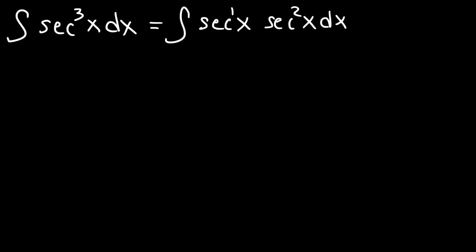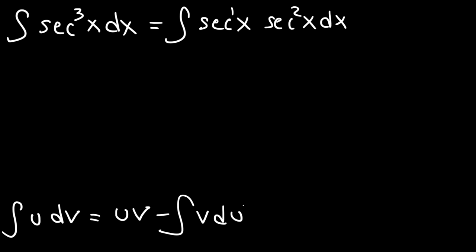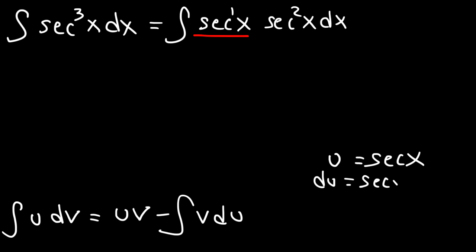We need to use integration by parts. The integral of u dv is equal to u times v minus the integral of v du. We're going to say that secant x is the u variable, so du has to be the derivative of secant, which is secant x tangent x dx.